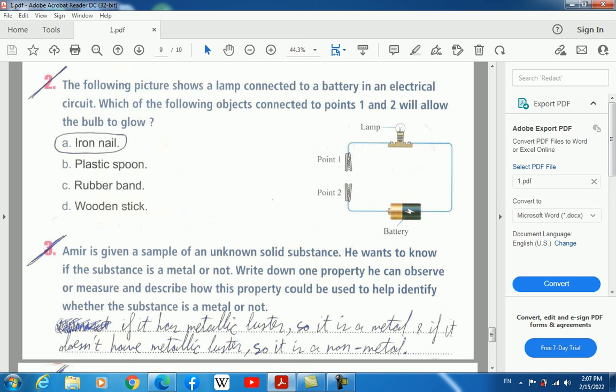The following picture shows a lamp connected to a battery in an electrical circuit. Which of the following objects connected to points 1 and 2 will allow the bulb to glow? We have to find something which is a very good conductor of electricity. We have iron nail, plastic spoon, rubber band, wooden stick. All of them are bad conductors except iron nail, which is a very good conductor. So we will choose the iron nail to make the lamp light.